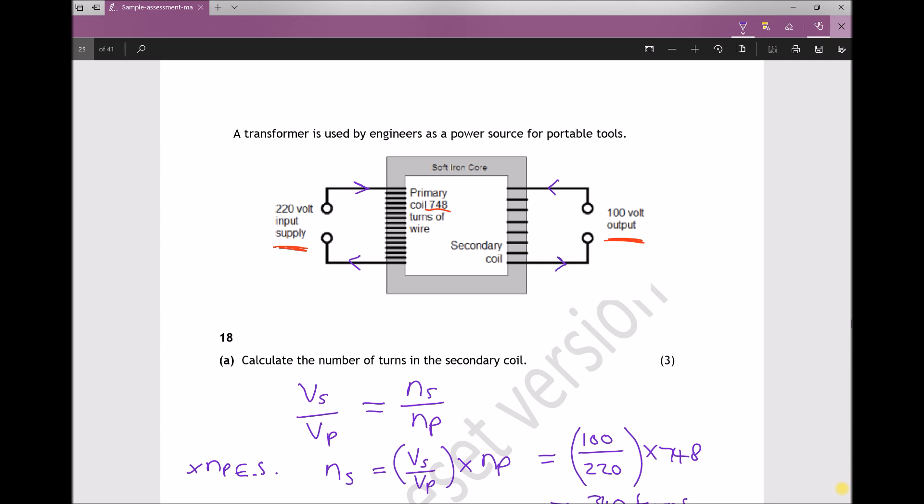But what we don't really want is any flow of current through the iron core. But that will actually happen because of the nature of the transformer. So we will get eddy currents traveling through the core itself.